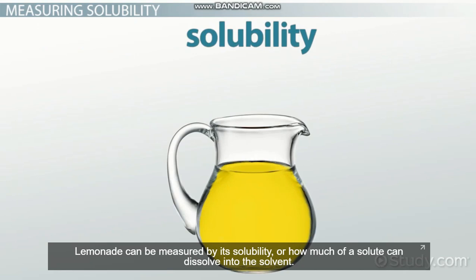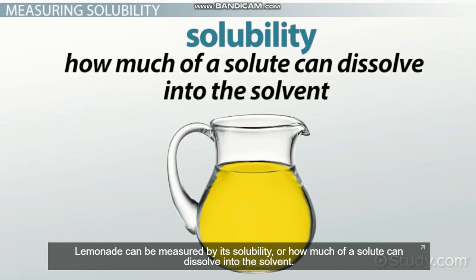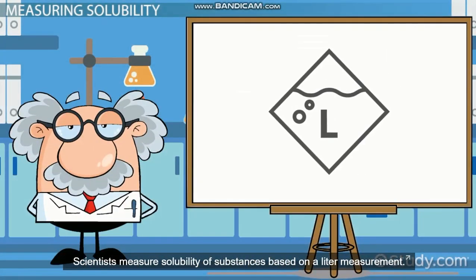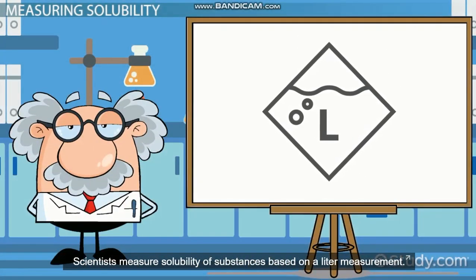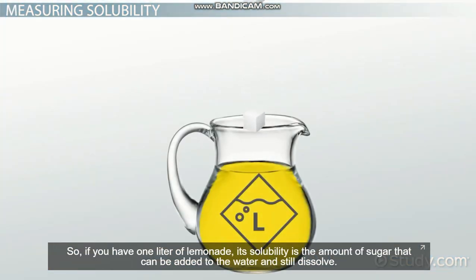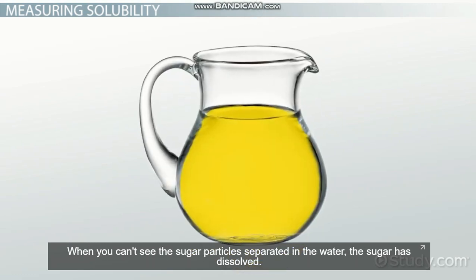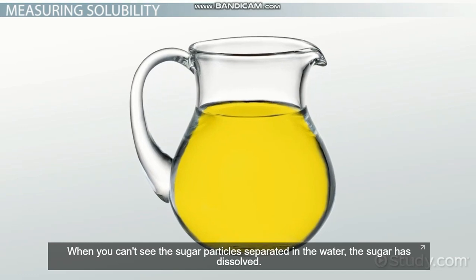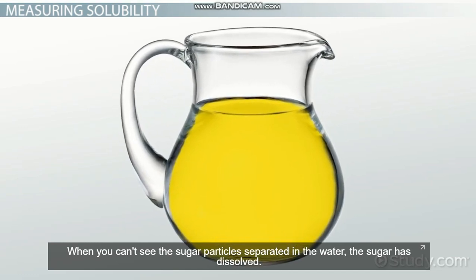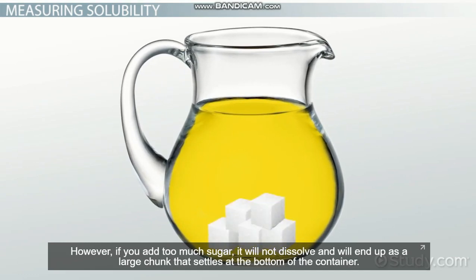Lemonade can be measured by its solubility, or how much of a solute can dissolve into the solvent. Scientists measure solubility of substances based on a liter measurement. So, if you have one liter of lemonade, its solubility is the amount of sugar that can be added to the water and still dissolve. When you can't see the sugar particles separated in the water, the sugar has dissolved. However, if you add too much sugar, it will not dissolve, and will end up as a large chunk that settles at the bottom of the container.